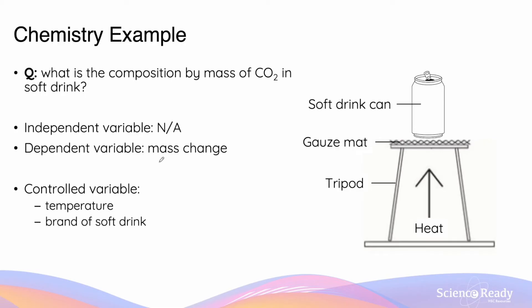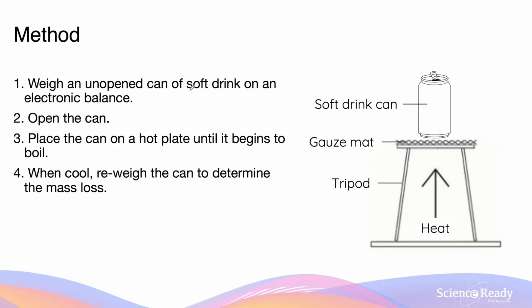The dependent variable is the mass change measured before and after heating the can. Control variables to keep constant include the temperature of the environment and the brand of soft drink, since the percentage of CO₂ varies between brands. The method involves: weighing an unopened can, opening it, placing it on a hot plate until boiling, removing all CO₂, letting it cool, then reweighing to determine final mass. Subtracting final from initial mass gives the mass loss, expected to equal the CO₂ that was in the soft drink.